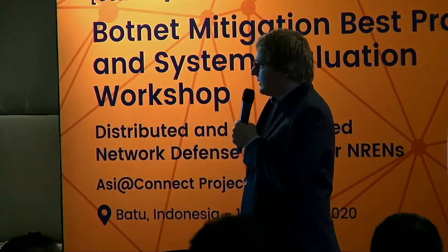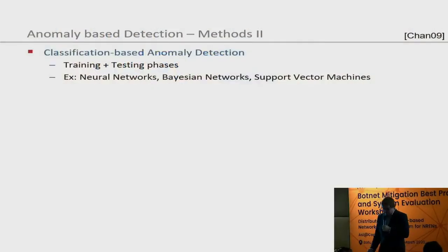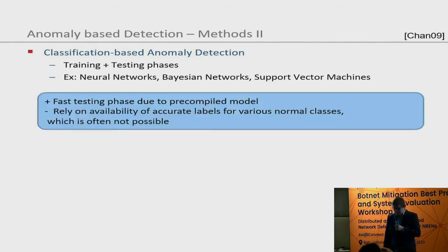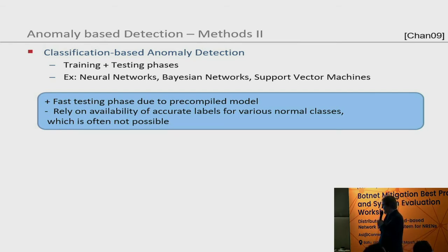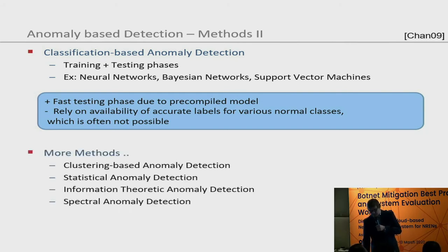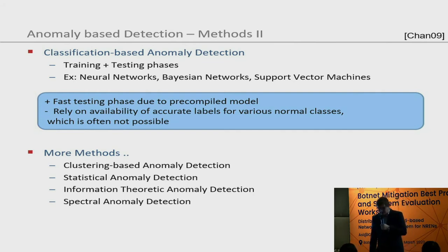For anomaly-based detection, approaches include nearest-neighbor — a form of unsupervised learning that adapts to different data by defining an appropriate distance measure, though performance depends on that measure and can yield a high false positive rate. Classification-based approaches using neural networks, radial basis networks, or support vector machines involve a training and testing phase. Some systems have pre-compiled models shortening the testing phase, but rely on accurate labels describing normal behavior, which is often not available. Other methods include clustering-based, information-theoretic, or spectral anomaly detection.